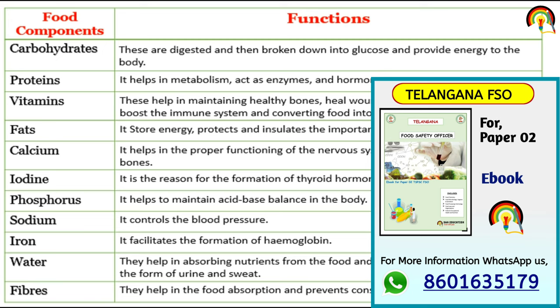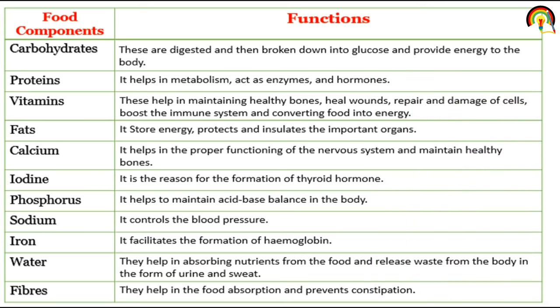Food components present in food include carbohydrate, protein, vitamin, fat, calcium, iodine, phosphorus, sodium, iron, water, and fiber. Carbohydrates are an example of macronutrients. They are digested and broken down into glucose, providing energy to the body. Carbohydrates are the main source of energy, enabling the body to perform functional work and day-to-day life activities.